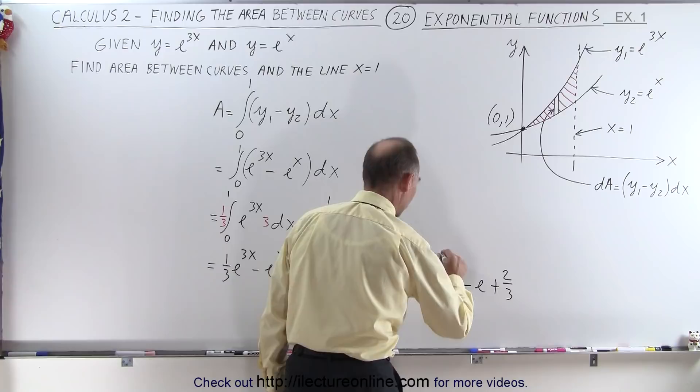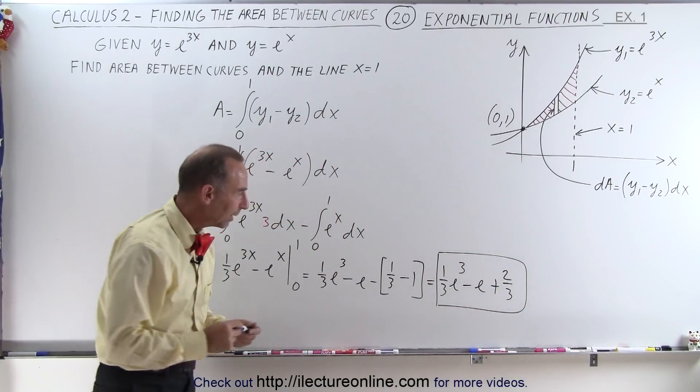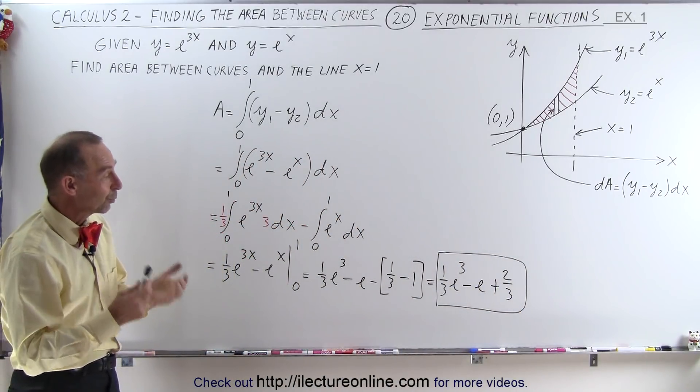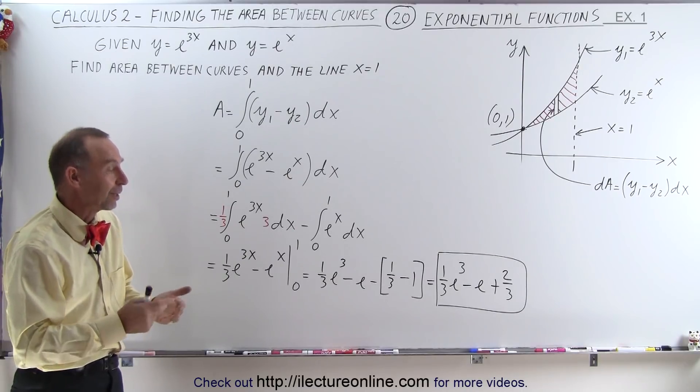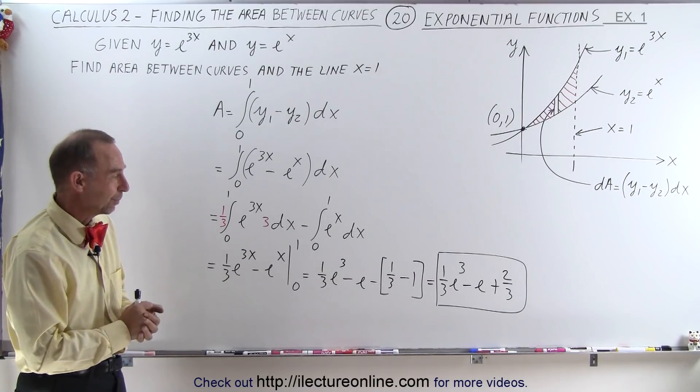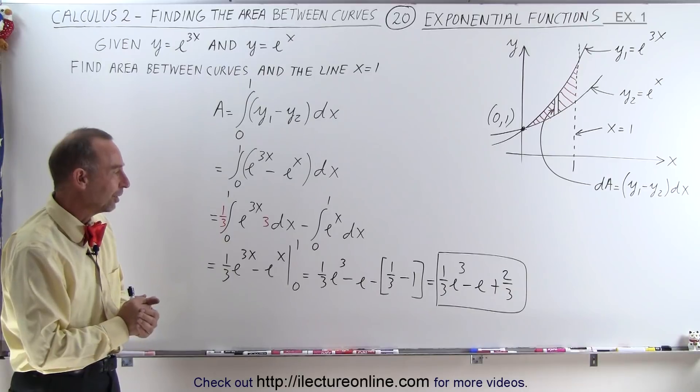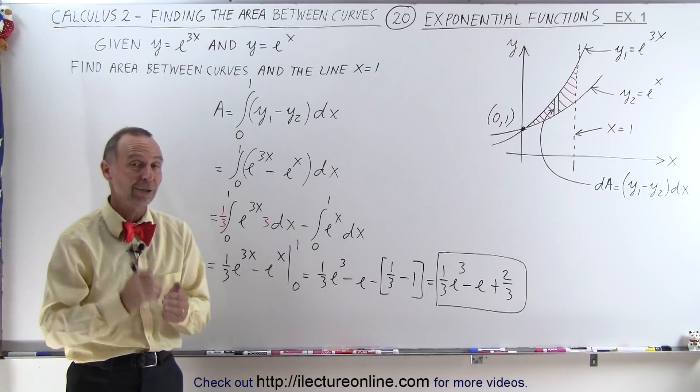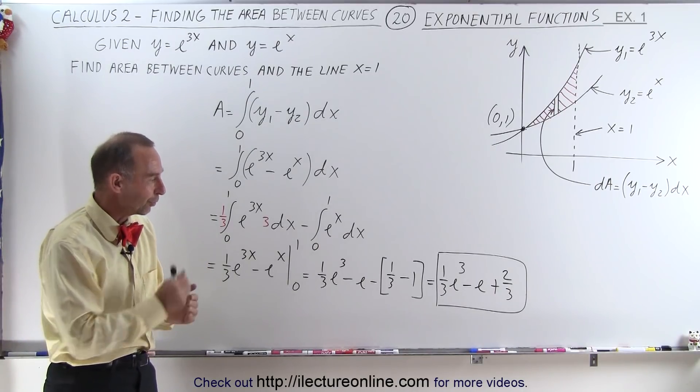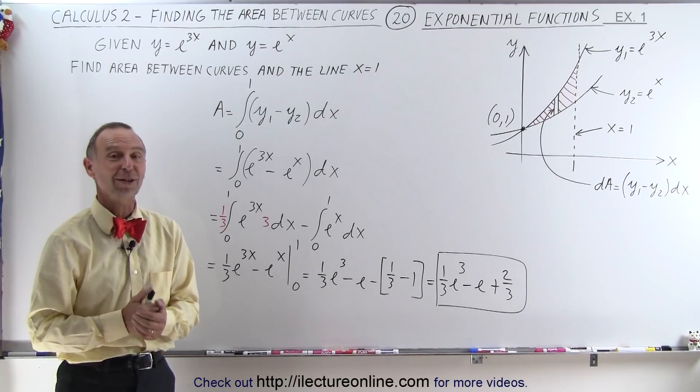And that looks like that would be a good way to put the answer, and that would then be the answer for the area between those two curves. It's not a nice number, I guess we can get a calculator and type it out, but that's good enough for us. That would then be the area bounded by those two exponential curves and the line x equals 1. And that's how it's done.